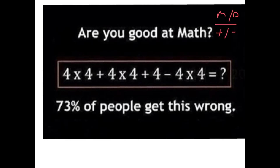So we start with our multiplications. 4 times 4 — there's a plus sign so it stays till the end. Then we have a plus sign, subtraction sign, and then a multiplication sign. Those three multiplications we've got to do first. So 4 times 4 is 16.